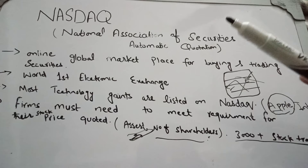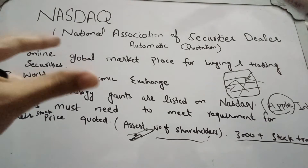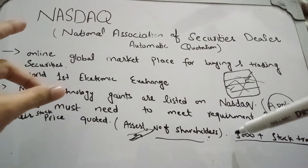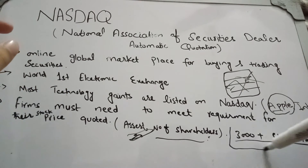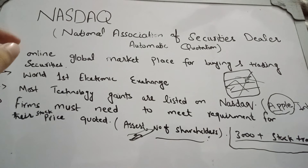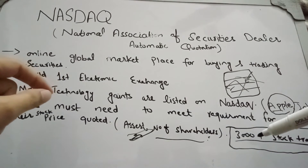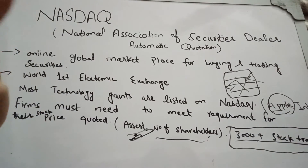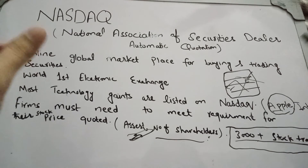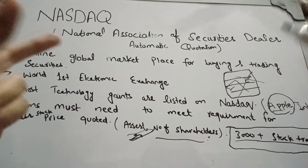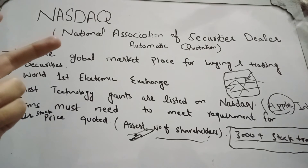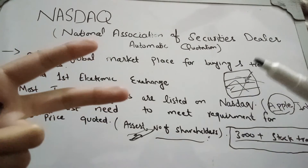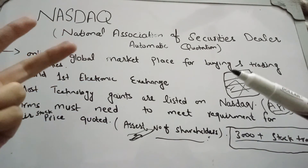There are certain requirements regarding number of shareholders, assets, and capital which need to be met. Almost 3000 plus stock trade companies are listed here, and 3000 plus companies trade their stock on a daily basis.